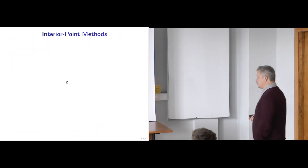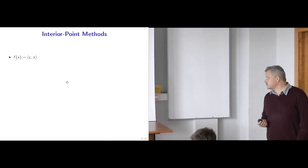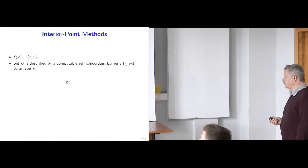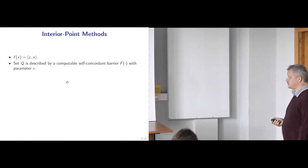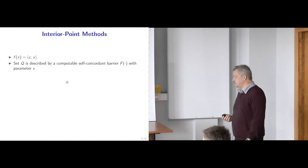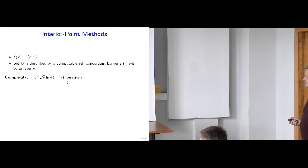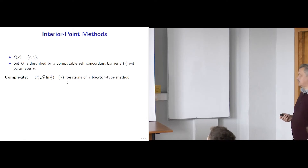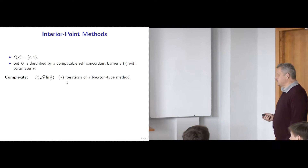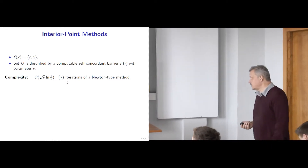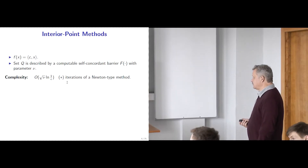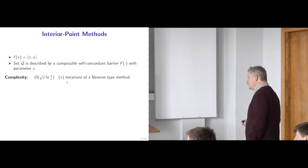We also looked at interior point methods. For interior point methods, we have to look inside the black box and construct, for a standard problem where the objective function is linear, a computable self-concordant barrier with barrier parameter nu. In this setting, nu is the main characteristic of the complexity of our problem. These methods need a number of iterations proportional to the square root of the barrier parameter. Each iteration is quite difficult — it is a Newton-type iteration with cubic dependence on the dimension.